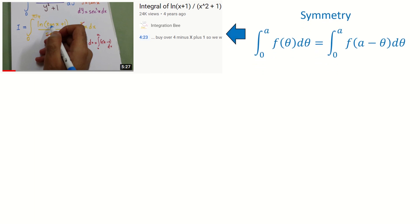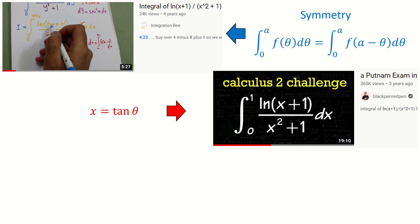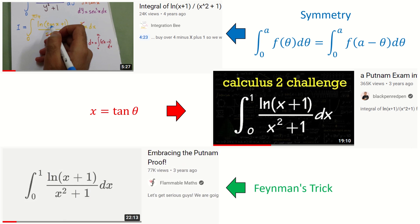The first one is to use symmetry, and here is a screenshot from the integration bee. The second one is to use tangent substitution, and here is a screenshot from the blackpenredpen. The third one is to use Feynman's trick, and here is a screenshot from the flammable maths.